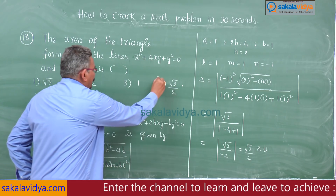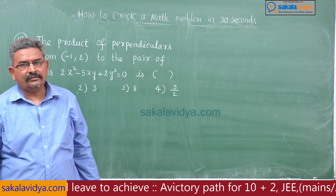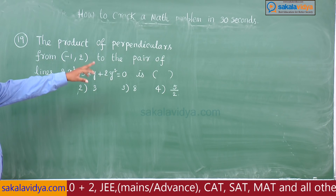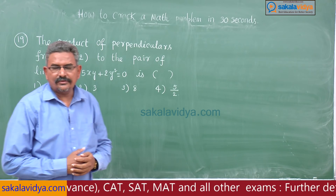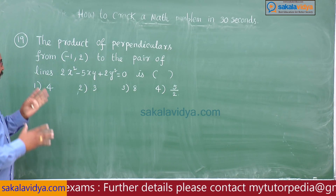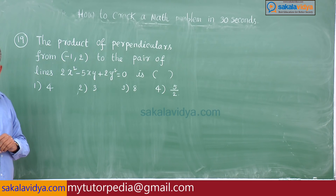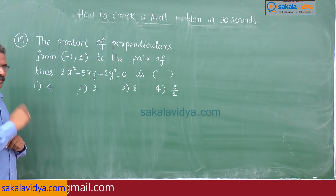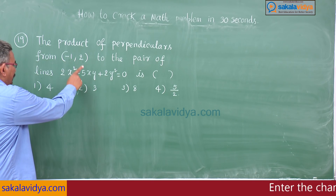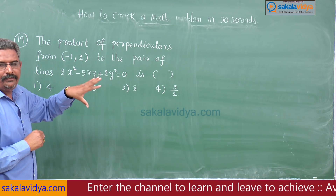This is very important — the fourth option is the right option. Now the 19th problem: The product of the perpendiculars from (−1, 2) to the pair of lines 2x² − 5xy + 2y² = 0 is — first option: 4, second option: 3, third option: 8, fourth option: 5/2. This can also be solved using a formula. The product of the perpendicular from (x1, y1) to the pair of lines ax² + 2hxy + by² = 0: substituting the respective values of x1, y1 and a, h, b gives the answer.